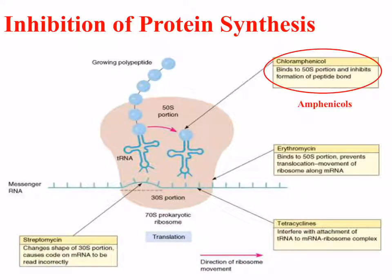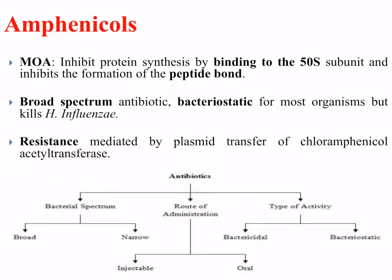The first class is the amphenicols. The amphenicols target the 50S portion of the ribosome and inhibit formation of the peptide bond, as highlighted in the diagram. A specific example of the amphenicols is chloramphenicol. The mechanism of action is to inhibit protein synthesis by binding to the 50S — the larger subunit — and to inhibit the formation of the peptide bond.